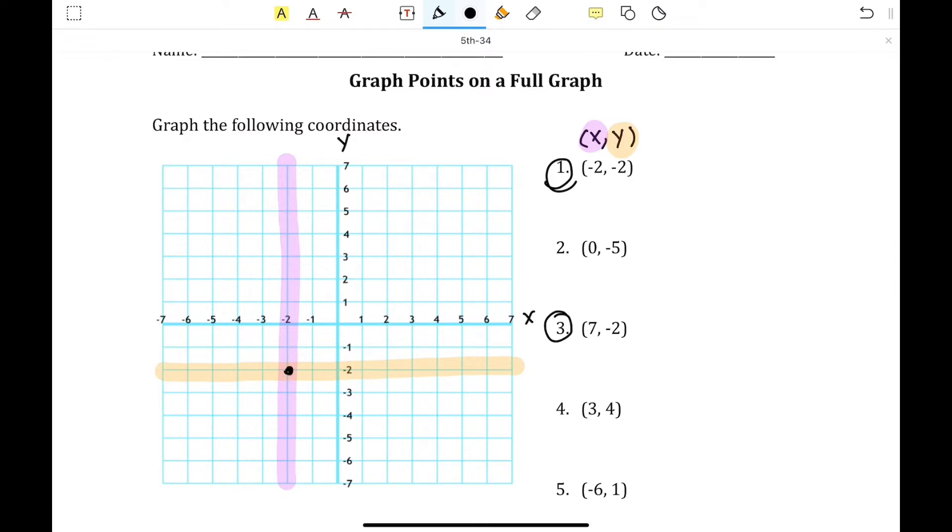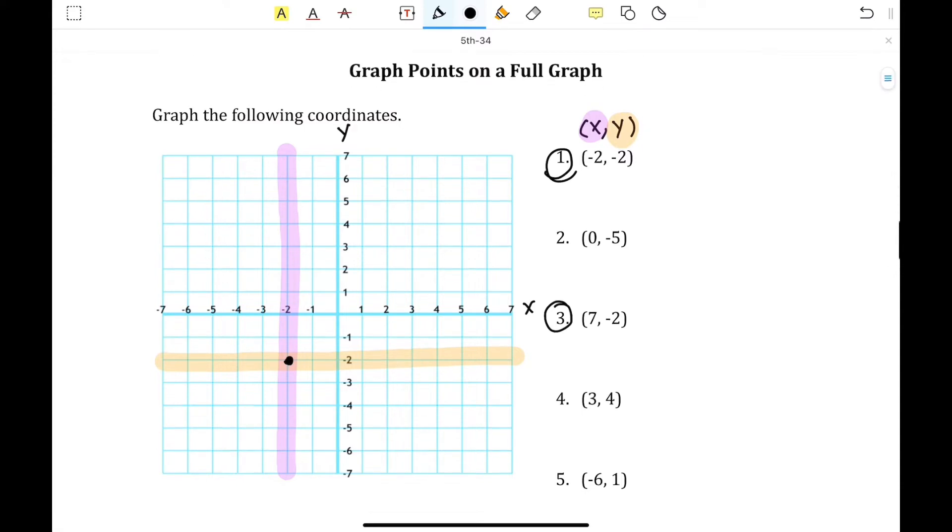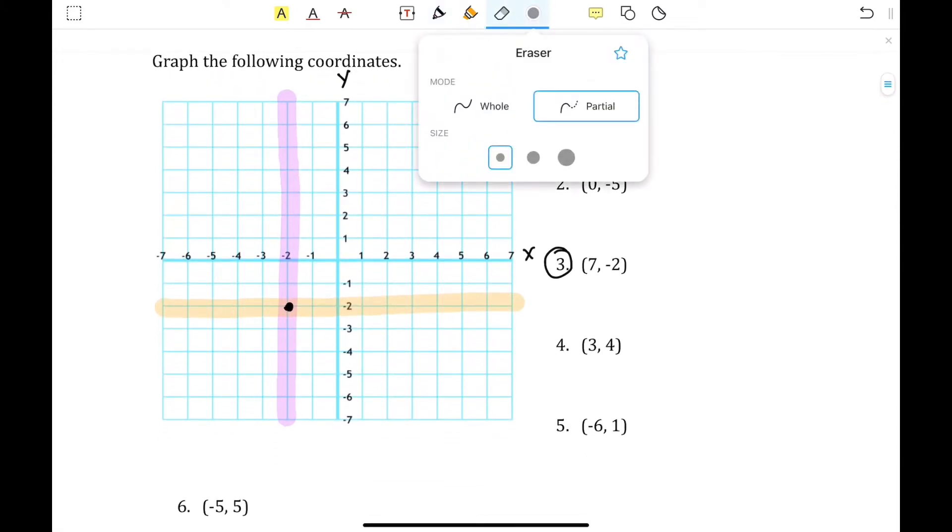And the intersection of these two lines is where negative 2, negative 2 is located. Now I'm going to erase this purple and the orange line in order for it to not get confused for number 3.